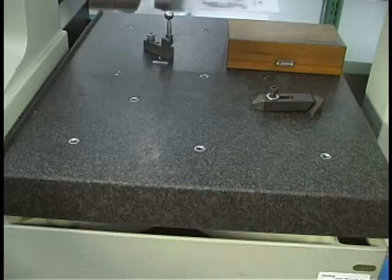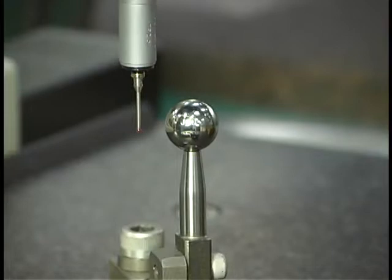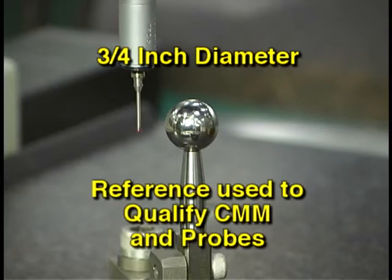The surface plate has holes with threaded inserts for placing mounting clamping devices. This is the qualification sphere. It is 3 quarters of an inch in diameter, precisely manufactured sphere. It is secured to the surface plate and used as a reference device to qualify the CMM and the probe being used before measurements begin.